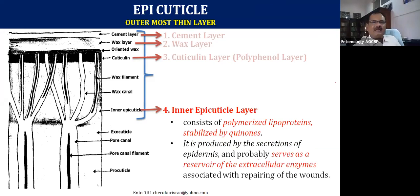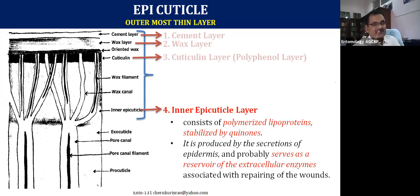The outermost layer of the insect integument is the epicuticle, which contains four layers: cement layer, wax layer, cuticlin layer, and inner epicuticle layer. Though very, very thin, every layer is extremely important. The cement layer is tough and protects from physical abrasions and pathogens. The wax layer is the one which protects the insect from loss of water. The cuticlin and inner epicuticle layers follow.